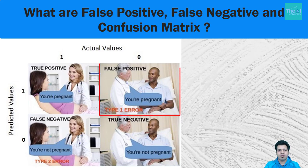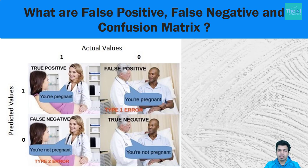Moving to the upper right quadrant: there is a man and a doctor telling him that he is pregnant. Since men cannot be pregnant and the doctor is telling him that he is, this case is referred to as false positive or type 1 error. In the lower left quadrant, there is a woman and a doctor who told her she is not pregnant, but she actually is — this is referred to as false negative or type 2 error.